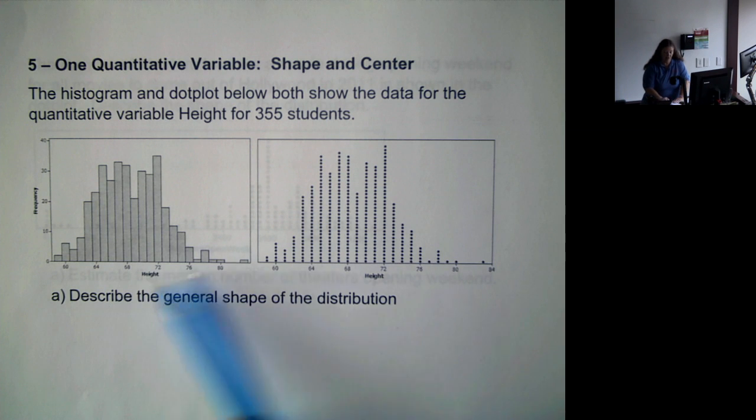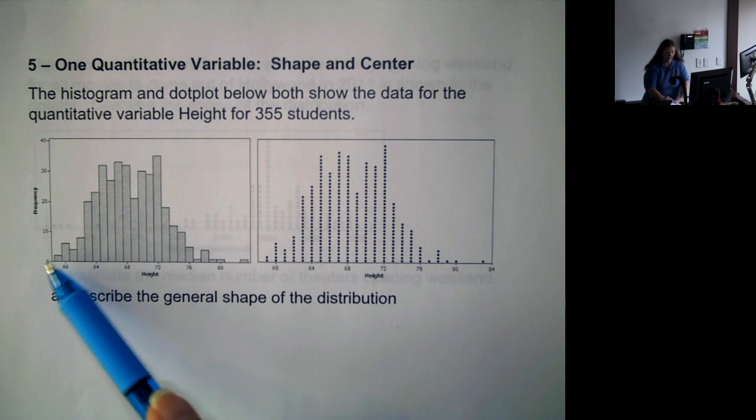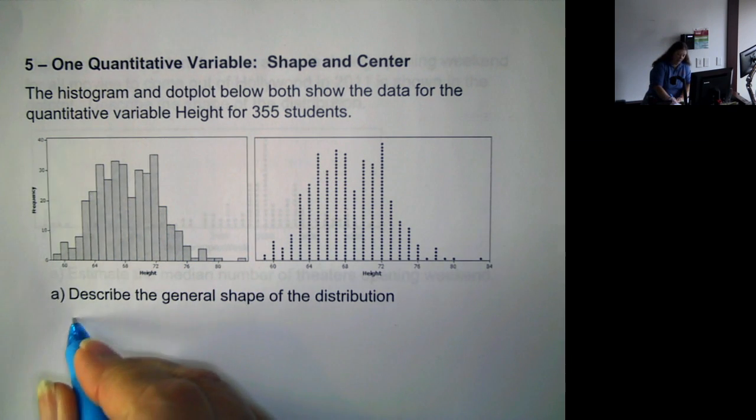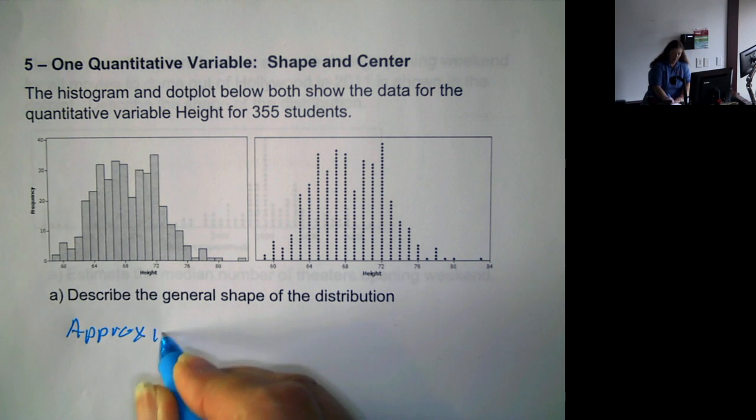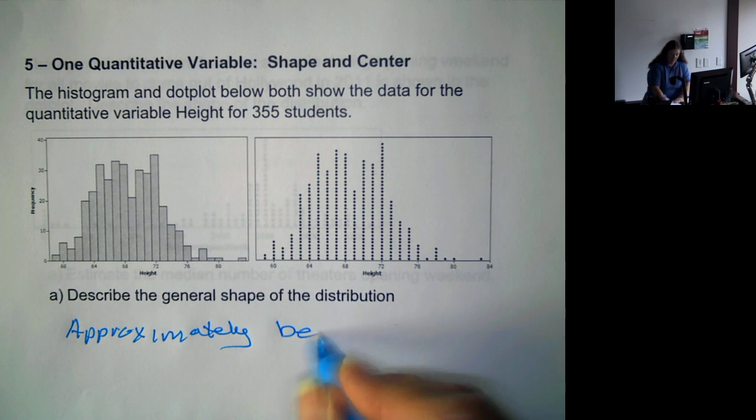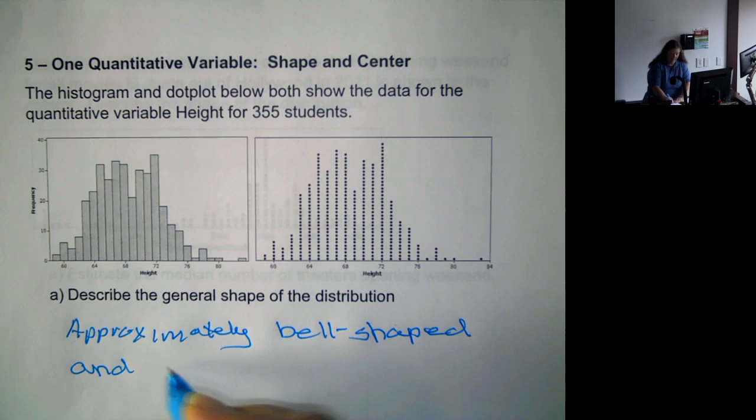So here we have a histogram and a dot plot showing data for quantitative variable of a height of 355 students. Now, if we want to look at the general shape of the distribution, if we look at it, it kind of goes up, peaks, and comes back down. So it is approximately bell-shaped and symmetric.